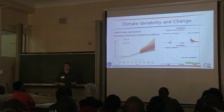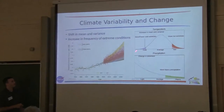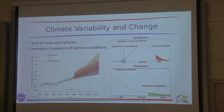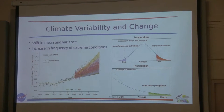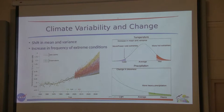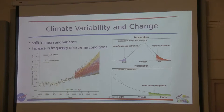That matters because we're not just pushing the average temperature over — we're also increasing the variance. This makes a big difference because you're not only increasing extreme conditions by a little bit, but by a lot. You're shifting the mean but also pushing down the distribution, increasing variance. So we see a lot of extreme conditions, both for temperature and precipitation and other variables, and that has obvious implications for diseases.